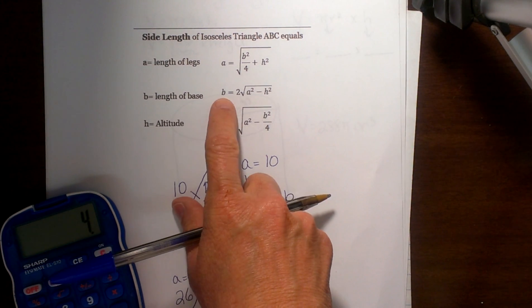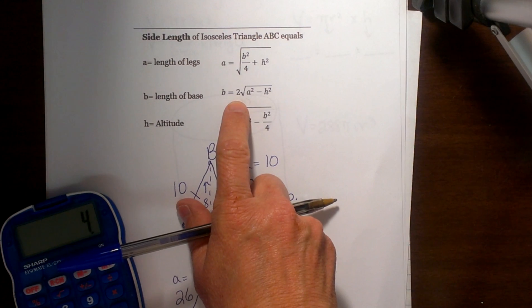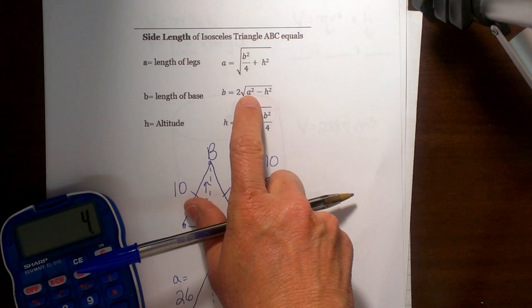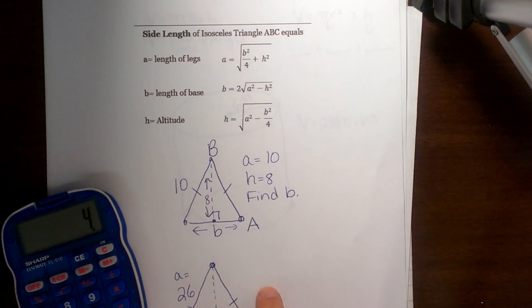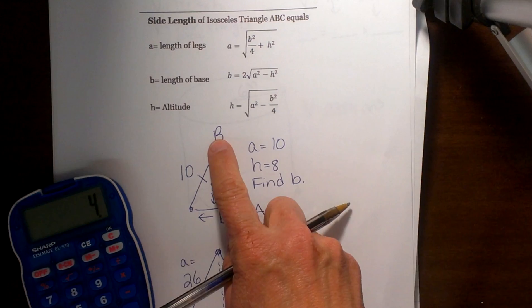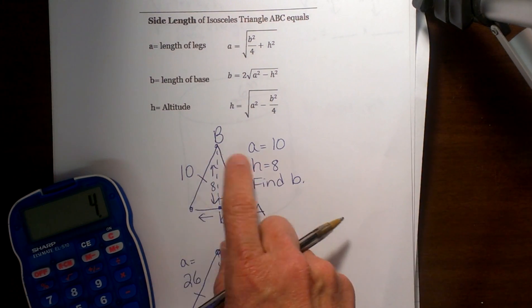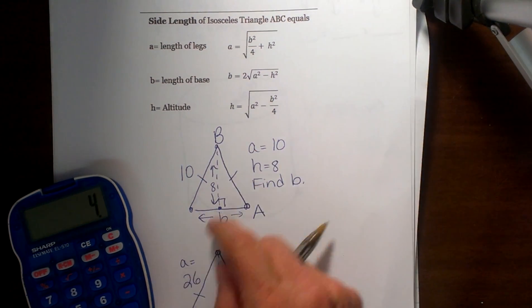To find this base length, I can use this formula: b = 2√(a² - h²), where a is one of the lengths of the isosceles congruent legs and h is the height or altitude inside here.